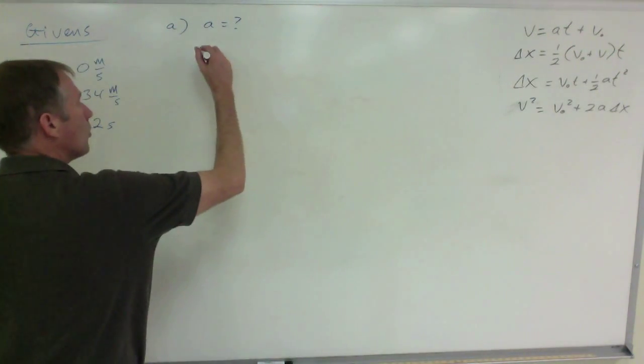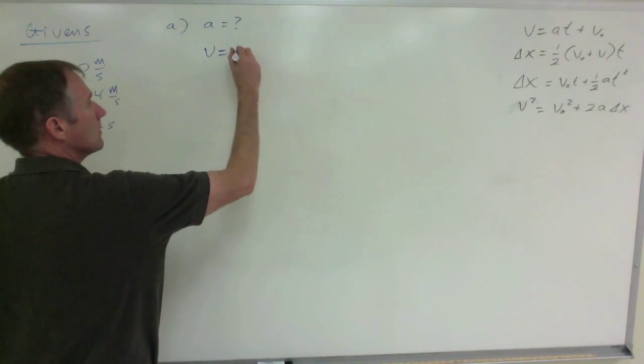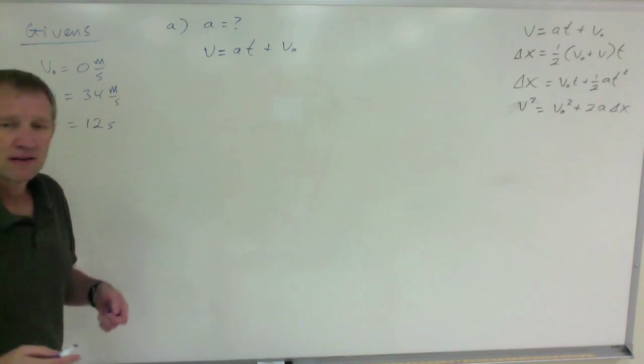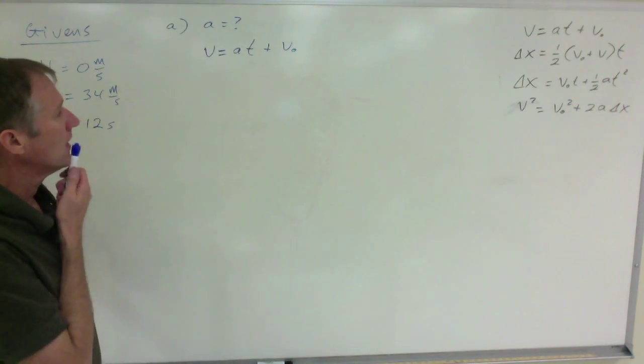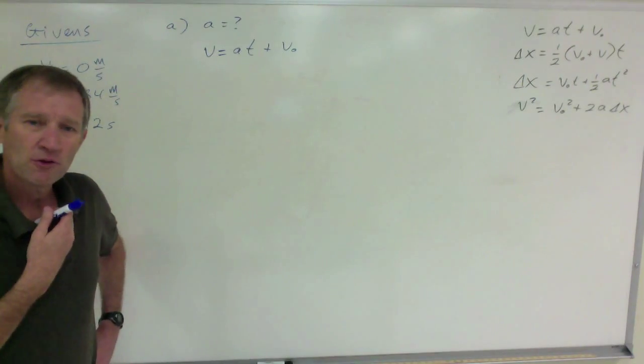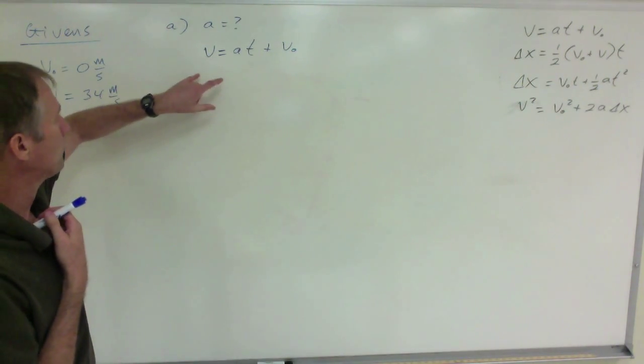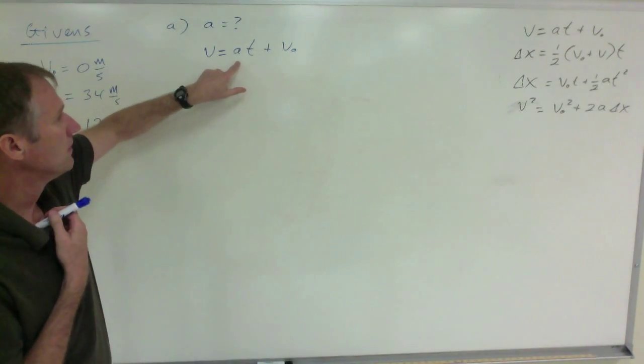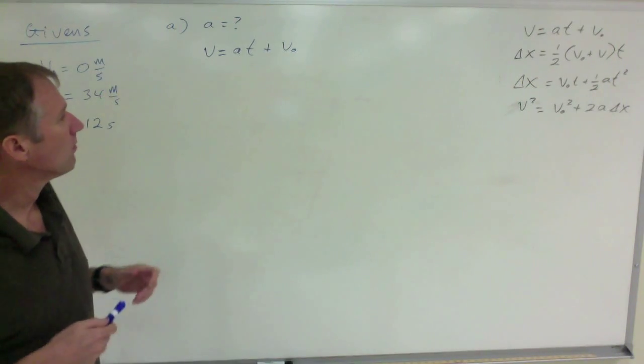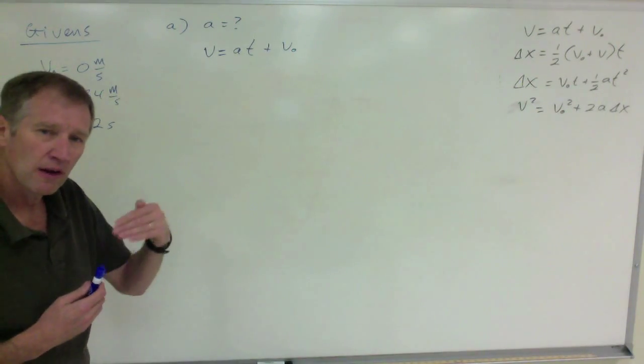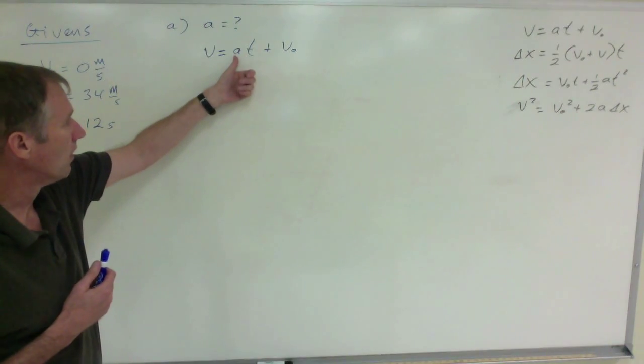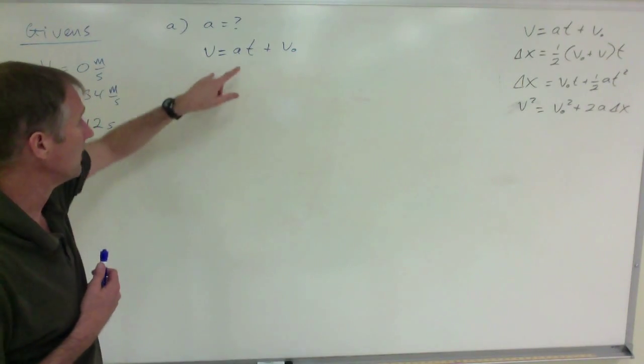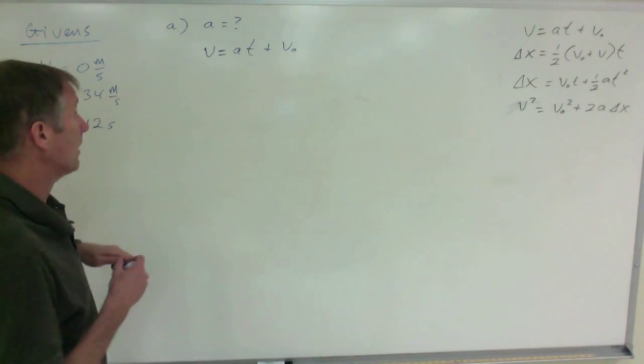Write down the raw equation without any additional numbers in it. Then you can put numbers in and solve. Some of you will prefer to put in the numbers and then solve it. More often than not, at more advanced levels of science, we require you to solve for the variable first and then put in the numbers. It doesn't really matter that much, but that is the preferred method. At the moment, I'm just going to put in the numbers and then solve.